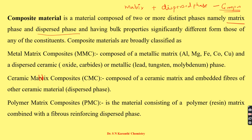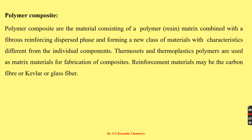Reinforcement materials used in polymer composites include glass fibers, boron filaments, carbon, and graphite fibers. These are the commonly adopted fibrous materials used in polymer matrix composites.